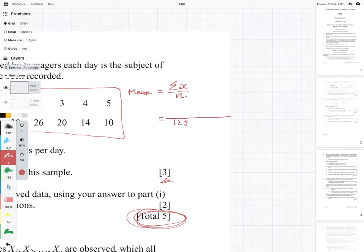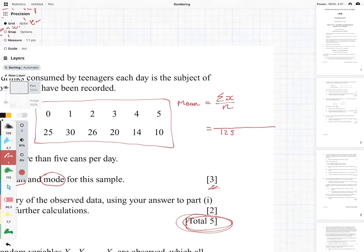Now what we need to do is add up all of these. So we've got 25 times 0, that's going to equal 0. We've then got 1 times 30, so we're going to have 30 plus 2 times 26, so that is 52 plus 3 times 20, that is 60 plus 4 times 14, which is 56 plus 5 times 10, which is going to be equal to 50. And then that's going to give us 248 divided by 125, and we're going to see that the mean is equal to 1.984.